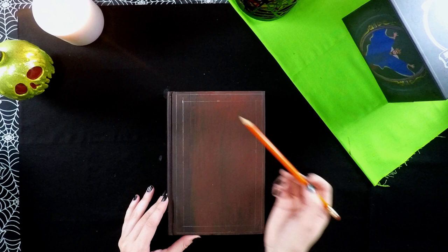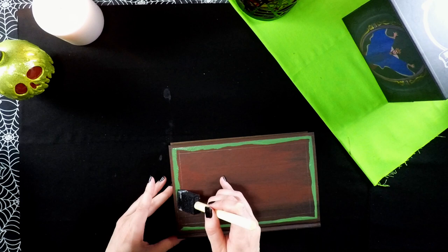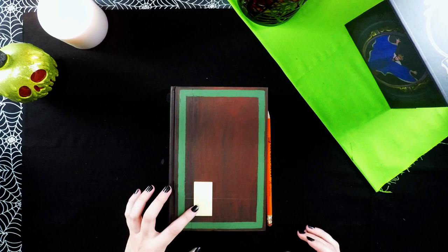Once the book is completely dry, I drew a border using pencil on the front cover of the book. The reason I didn't show this was because I couldn't find my ruler so I had to use a yardstick and that would not fit on the table to be filmed. Next, I'm filling in that border with green paint.